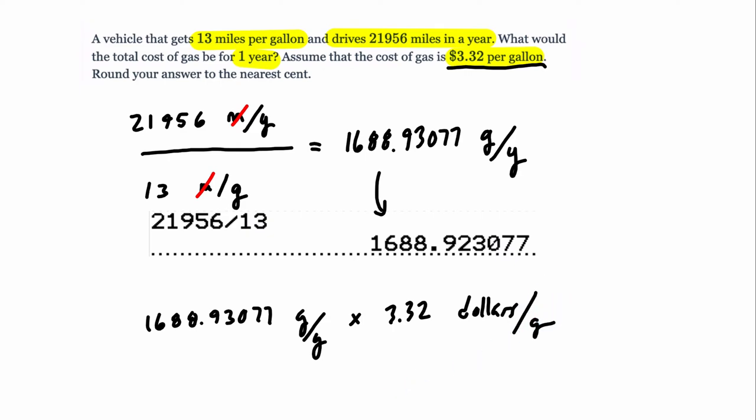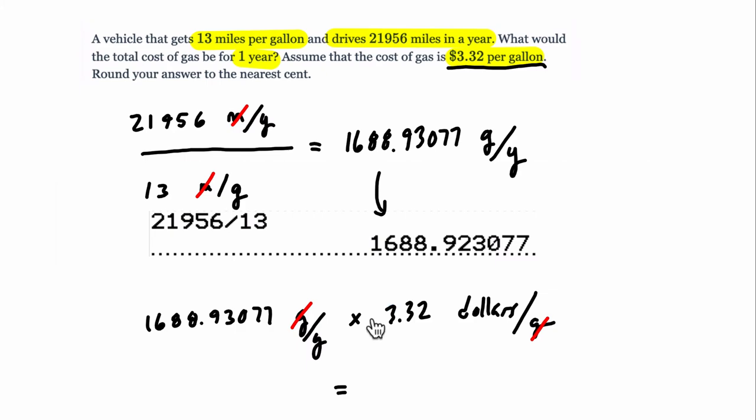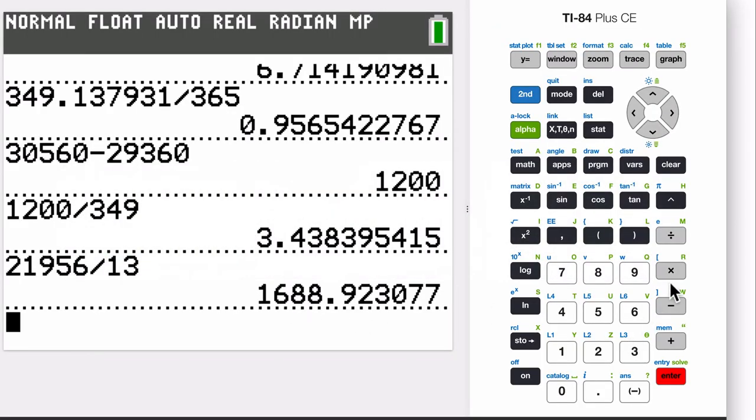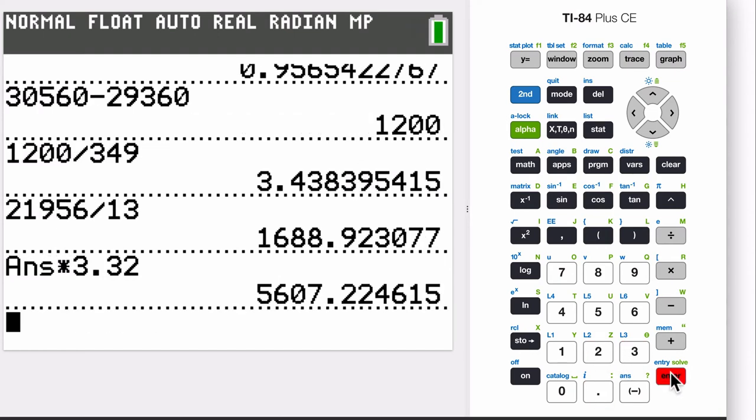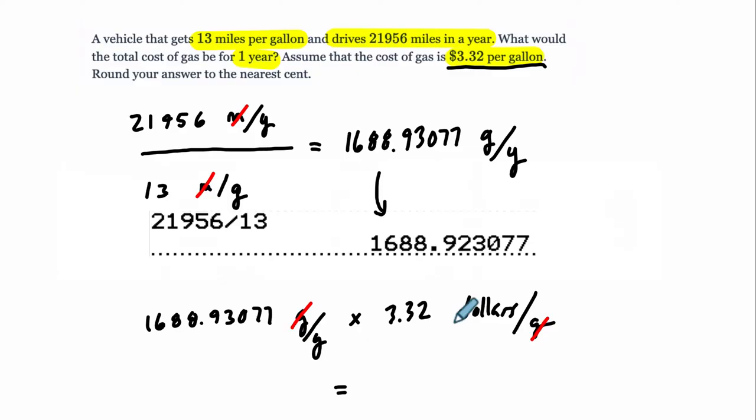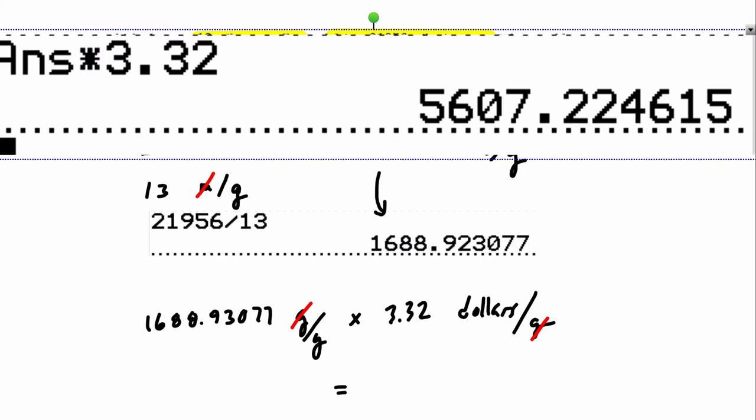So that's dollars per gallon. So then we take this amount, 1688.93077 gallons per year, and we multiply that by how much each gallon costs. So $3.32 or $3.32 per gallon. And what'll happen here is the gallons will cancel out, and then we're left with units dollars per year. So we can do that in the calculator, we've got our previous number 1688 already saved, times $3.32 per gallon, and we'll grab that number, $5607.22. Go back. Am I right?